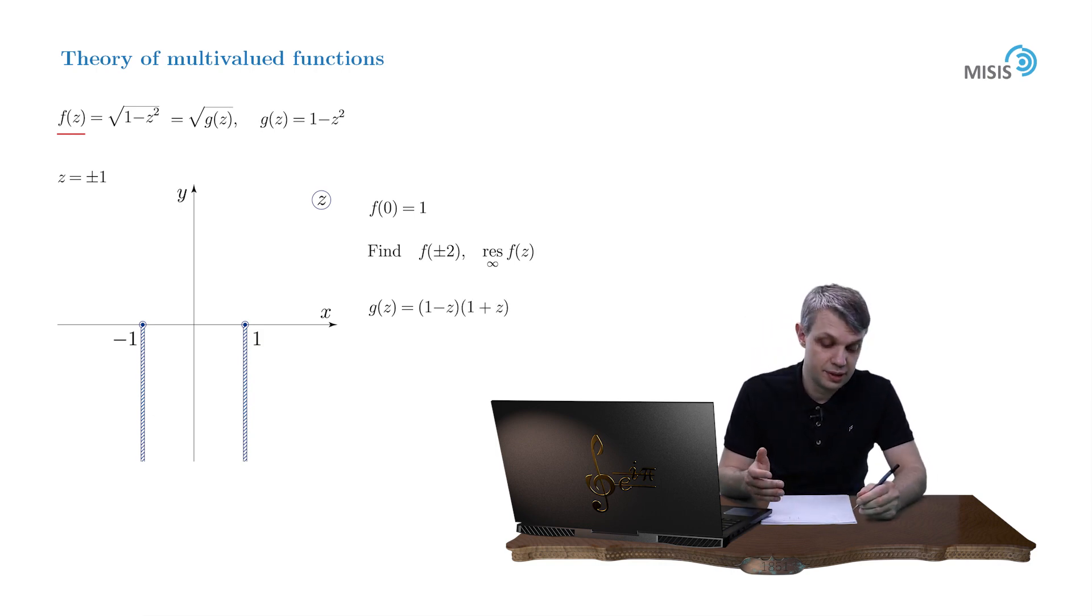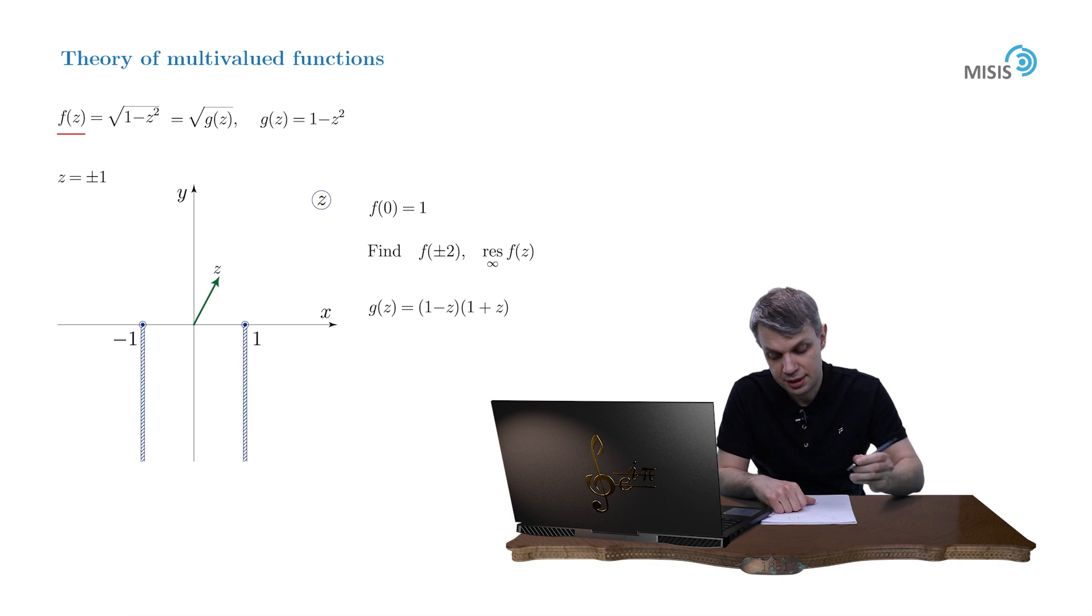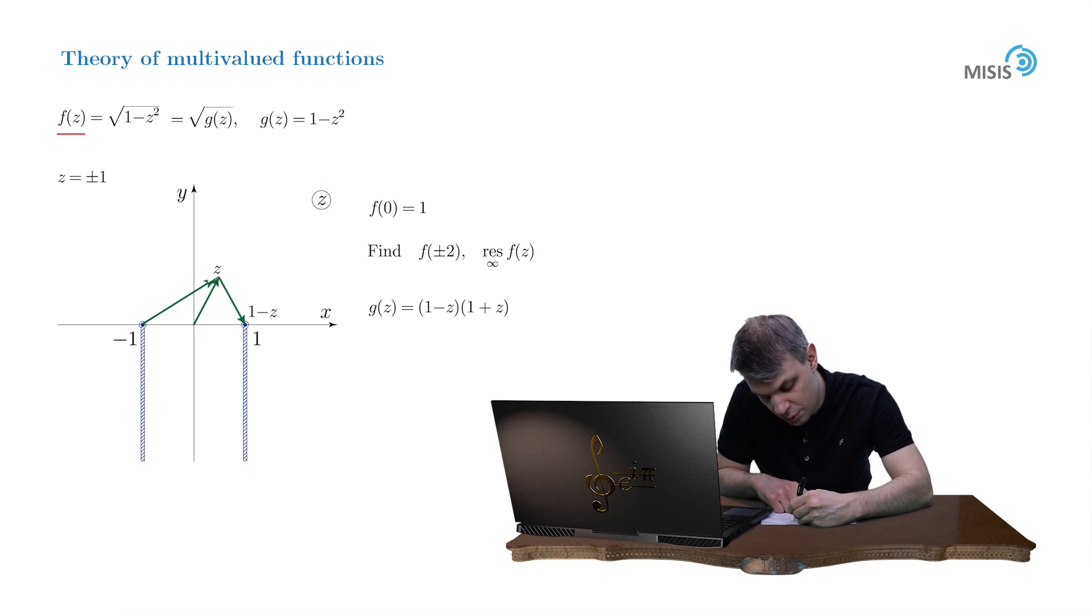These two complex numbers can be represented by arrows in the complex plane. Number 1 minus z is represented by the arrow starting at point z with the head at point 1. The number 1 plus z is represented by the arrow beginning at point negative 1 with the head at point z.